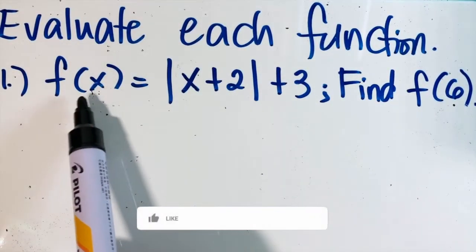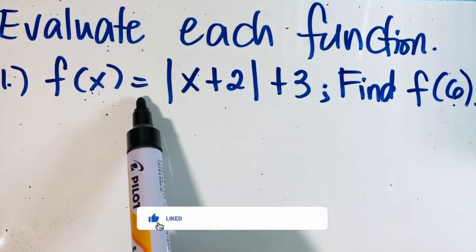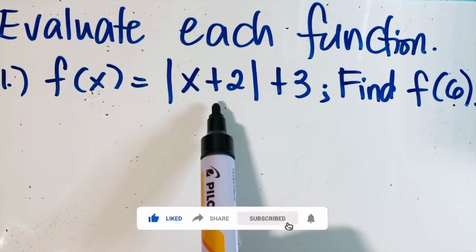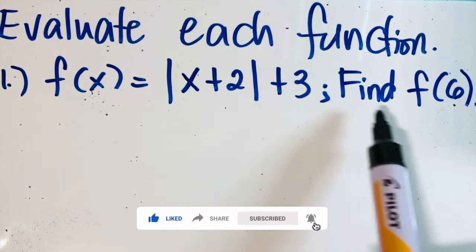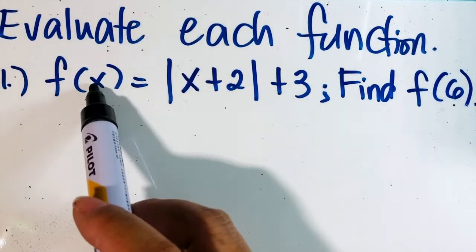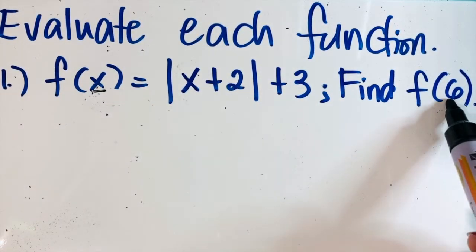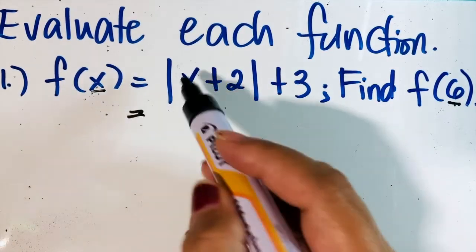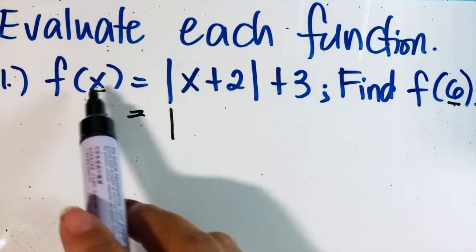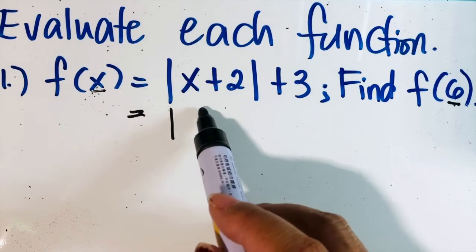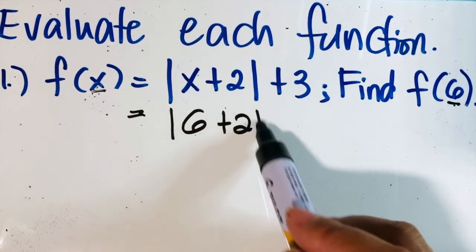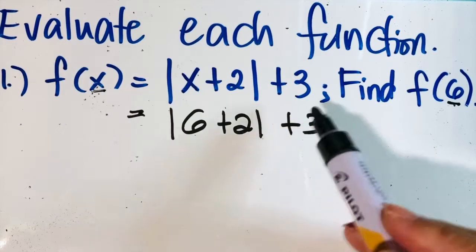Evaluate f of x equals the absolute value of x plus 2, plus 3. Find f of 6. Since x is 6, simply plug in or substitute: the absolute value of 6 plus 2, plus 3.